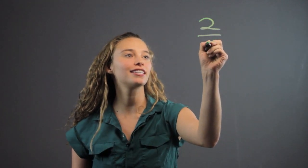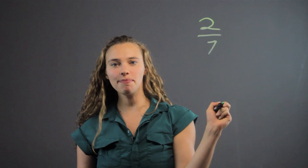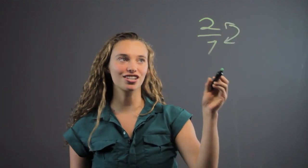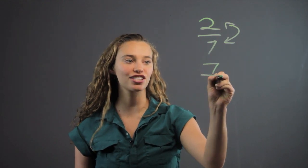When you have a fraction like 2 over, let's say, 7, the reciprocal is just flipping that fraction. So in this case, it becomes an improper fraction, 7 over 2.